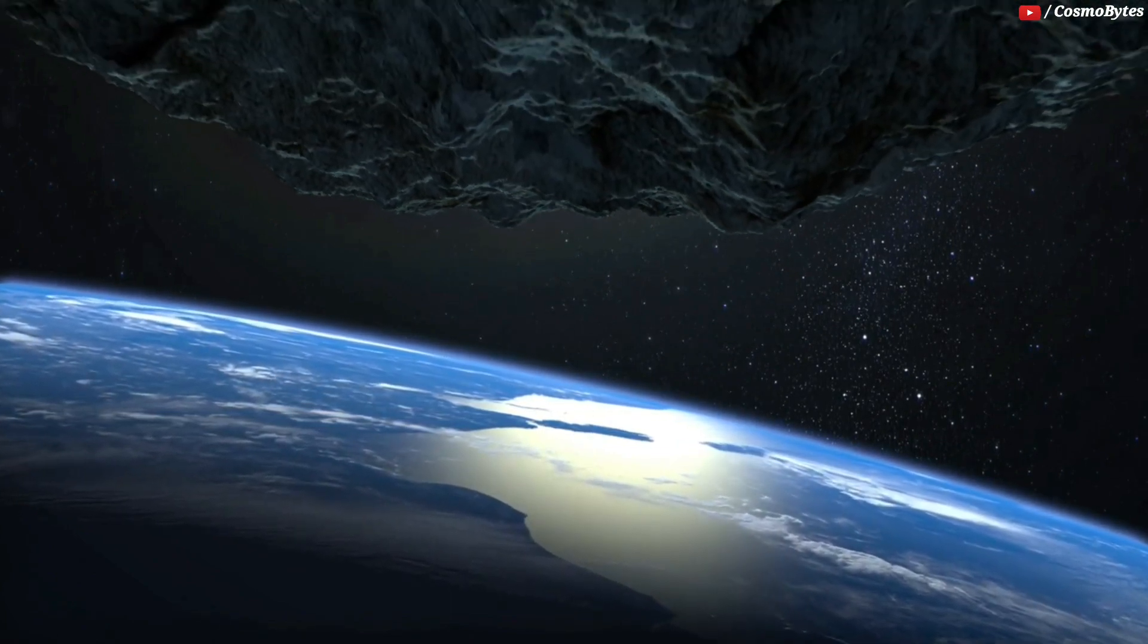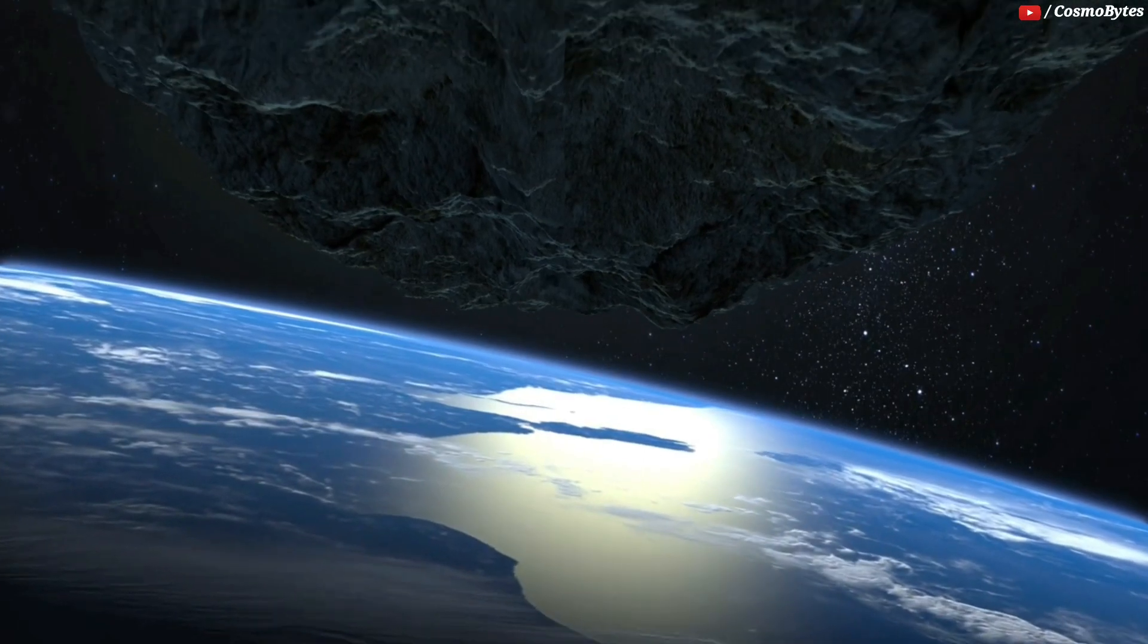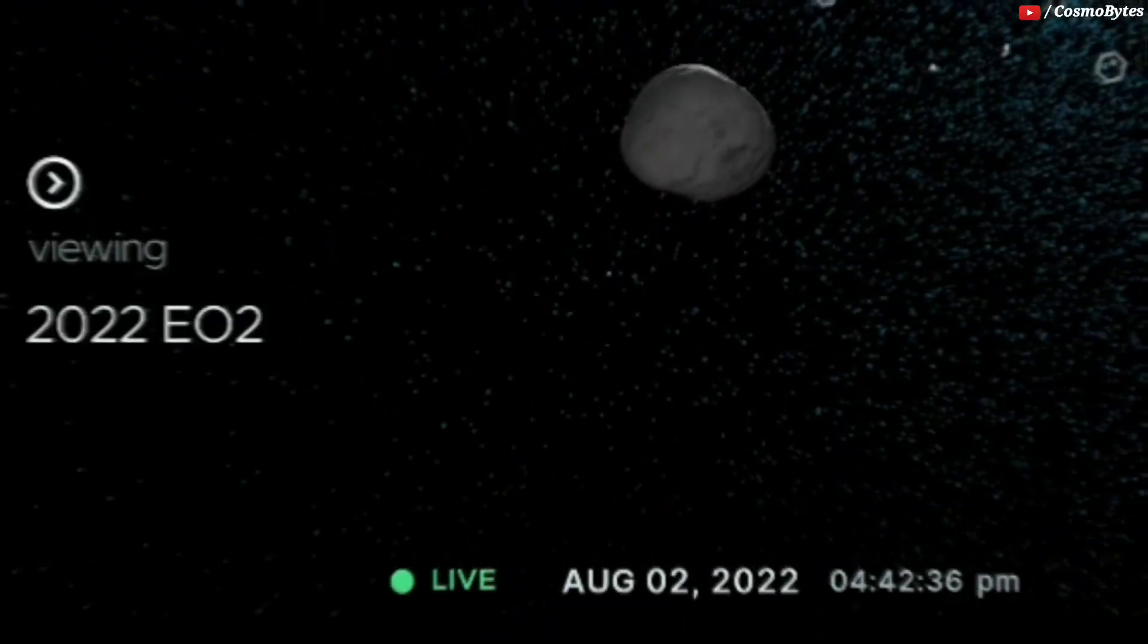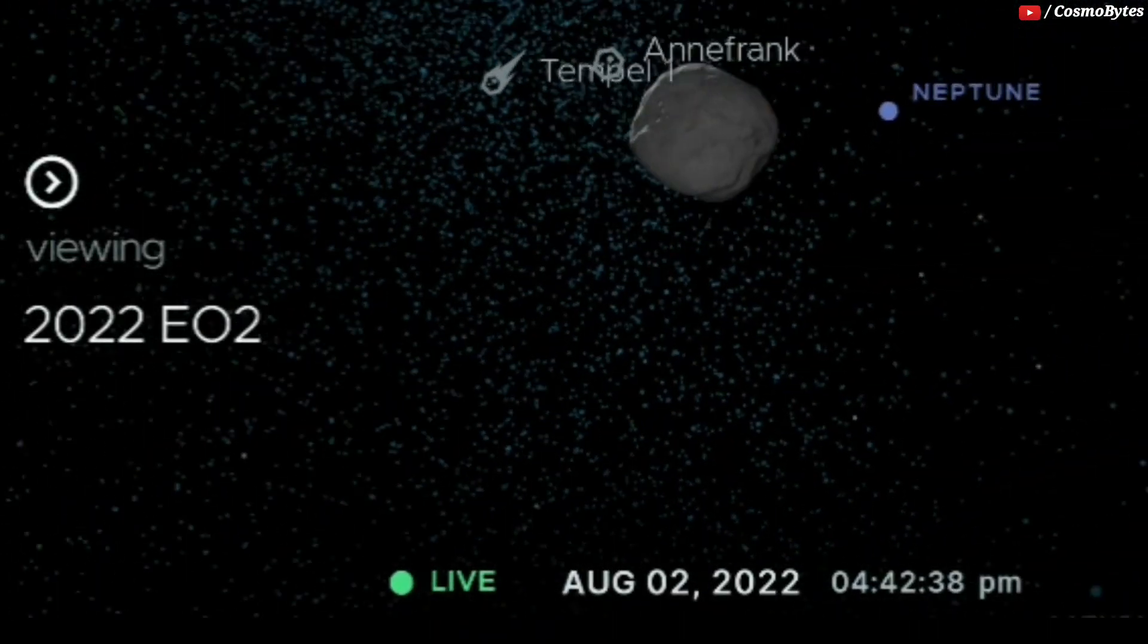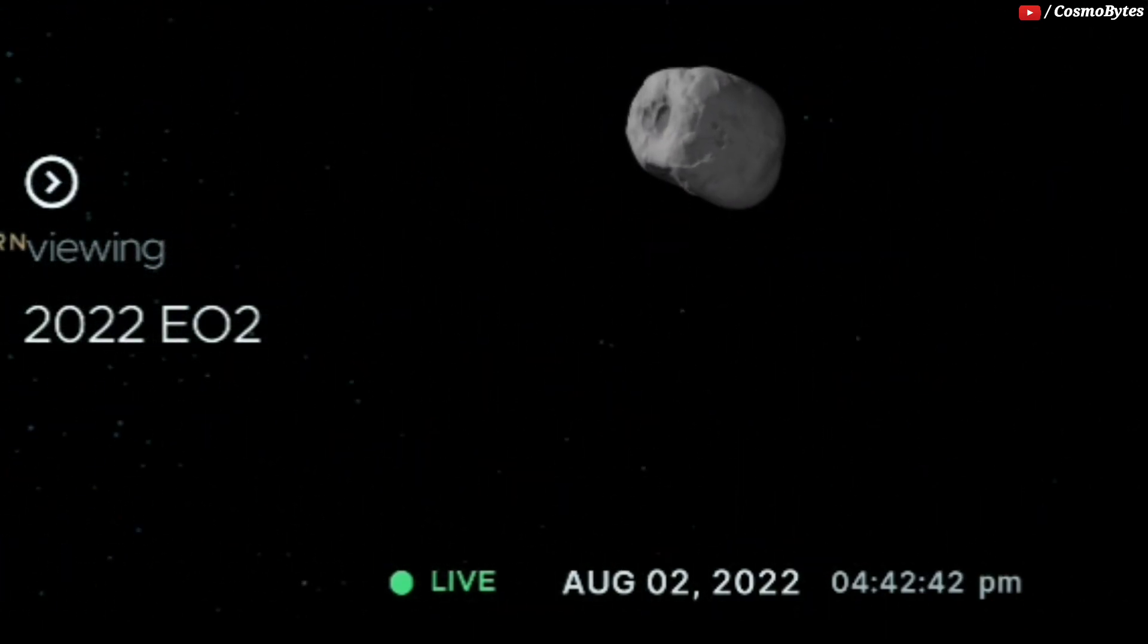However, an asteroid is currently hurtling toward our planet, making these objects seem to be small pebbles. This 1,200-foot diameter asteroid is a massive space rock that will be closest to Earth tomorrow, August 3, and is traveling at a very fast speed.